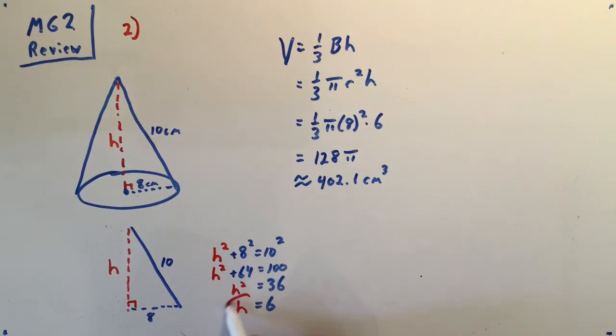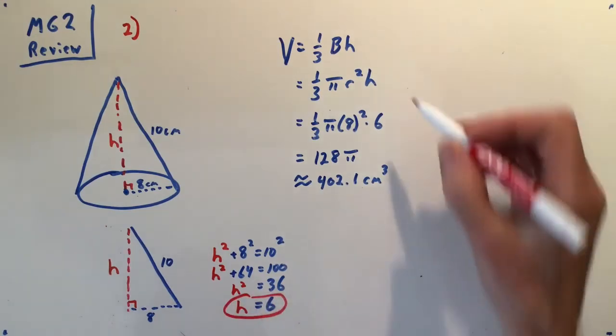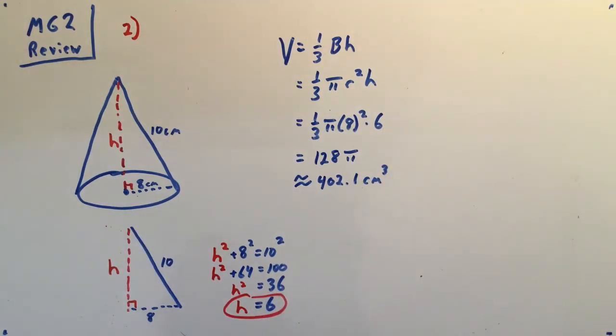Slant height is the hypotenuse, and then I just use my Pythagorean theorem here and that's going to give me h equals 6.